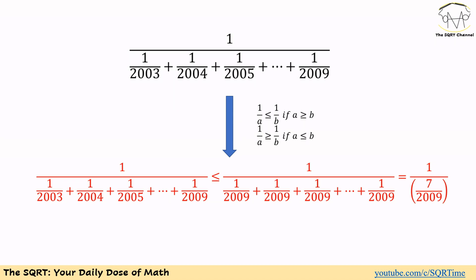We have a fraction where the denominator is 1 over 2003 plus 1 over 2004 up to 1 over 2009. We can say that 1 over 2003 is greater than 1 over 2009, and similarly 1 over 2004 is greater than 1 over 2009. So if we replace all the terms in the denominator with just 1 over 2009 for each term, then the whole expression is going to be less than or equal to the new expression.